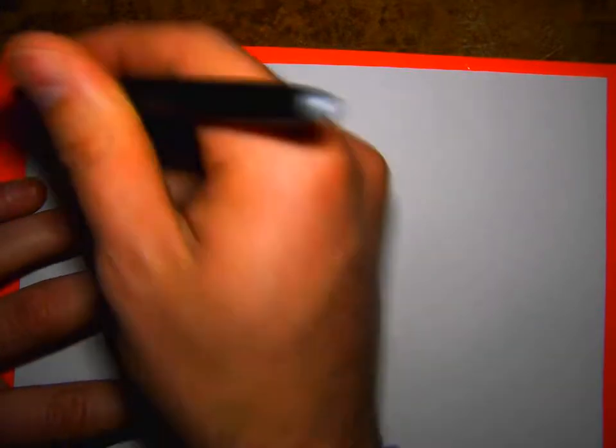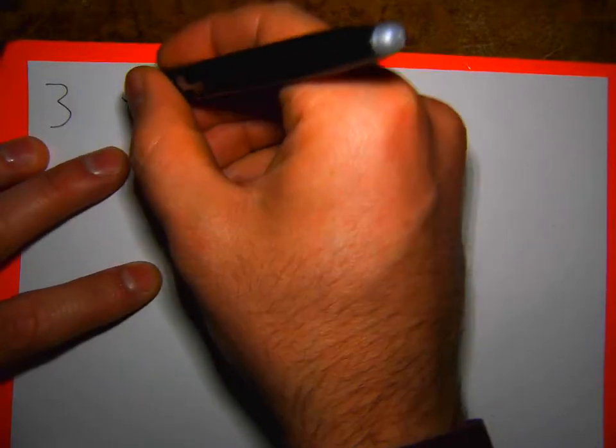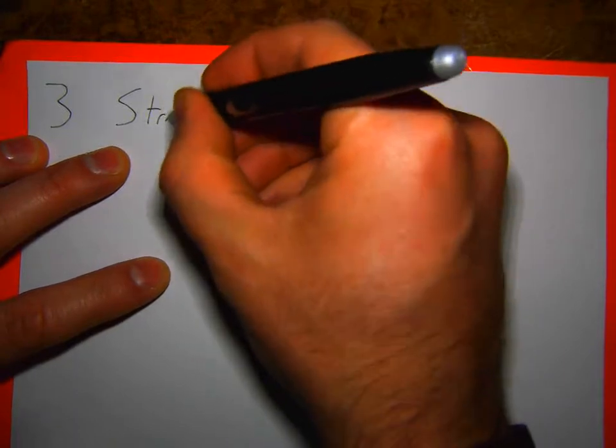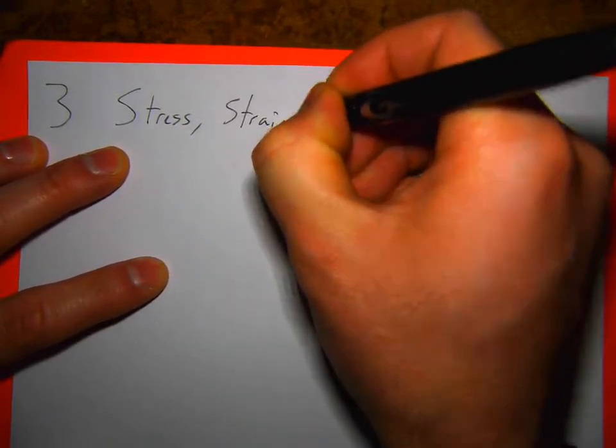Now let's jump to talking about stress and strain. On the second lecture we talked about what stress was, what strain was, what engineering stress and strain were, how they were defined. But now I want to talk about it in a little bit more depth and actually go through stress transformations and strain transformations — which should still be somewhat review. This section in the notes is Section 3: Stress, Strain, and Elasticity. I'll start with stress.